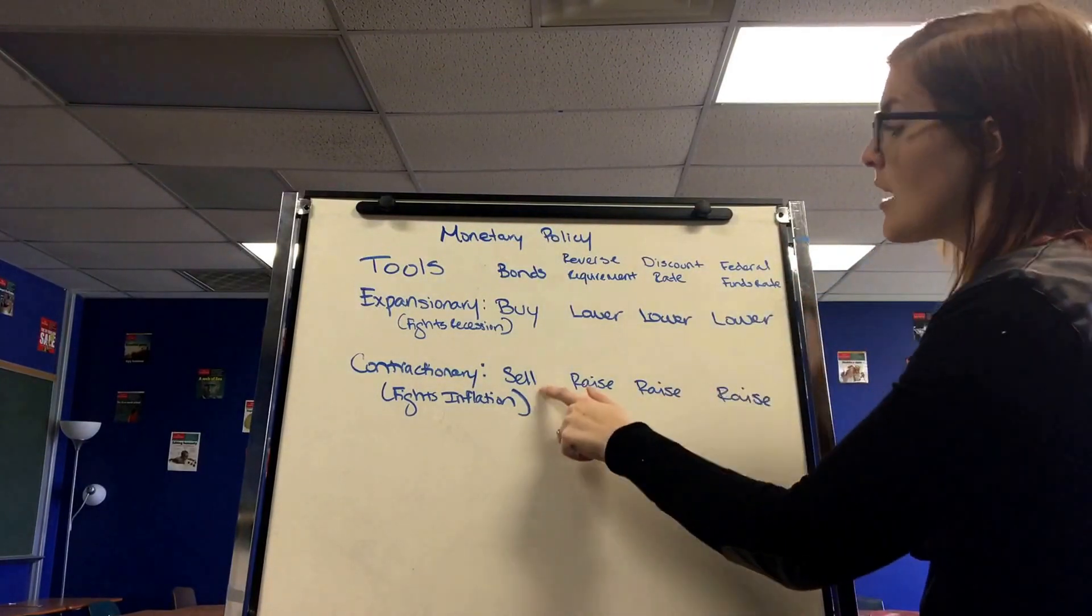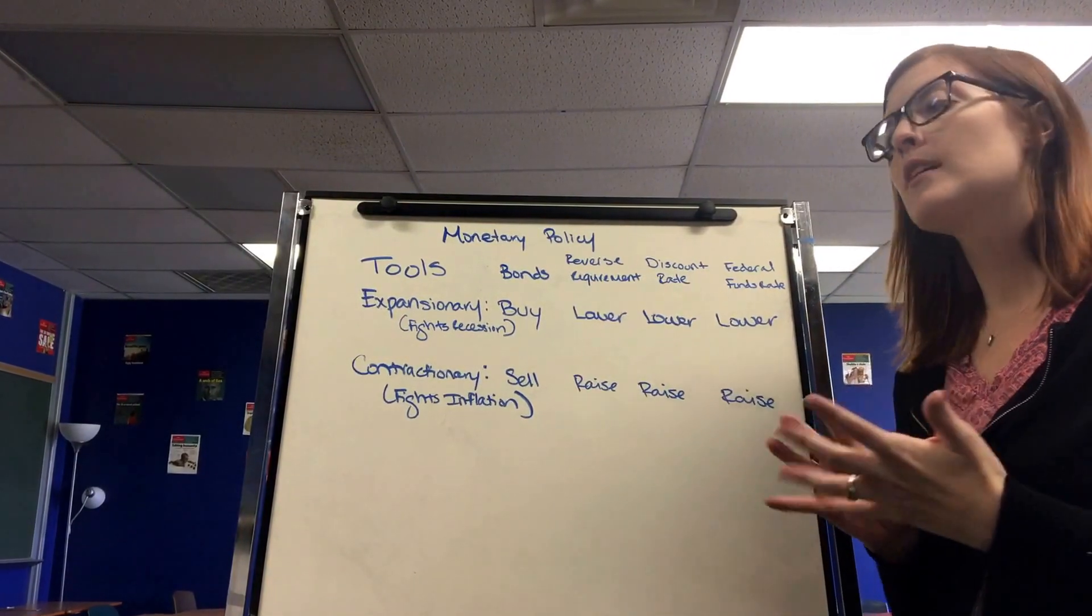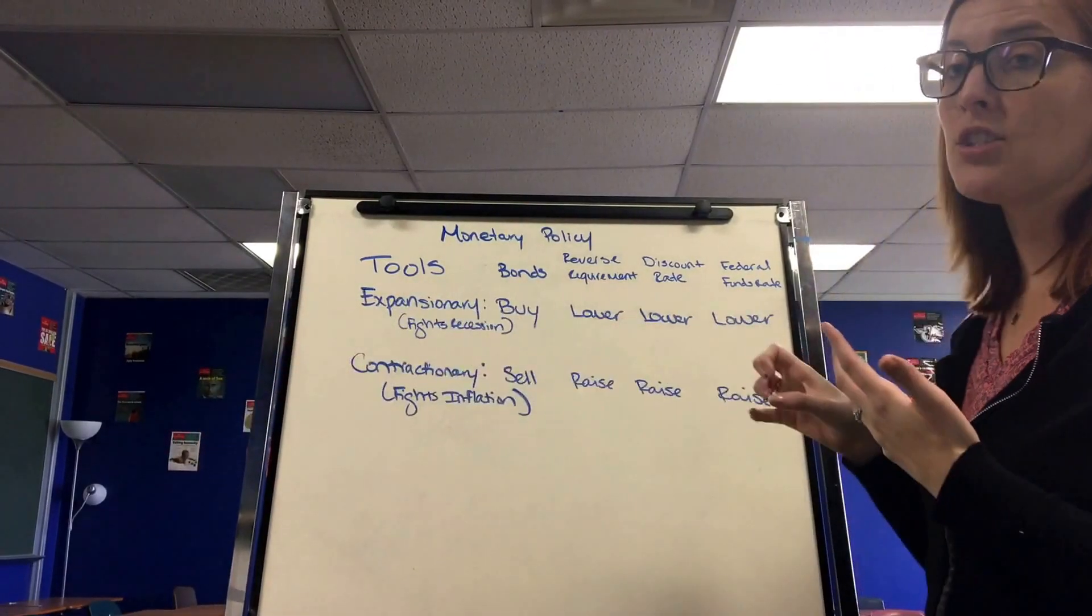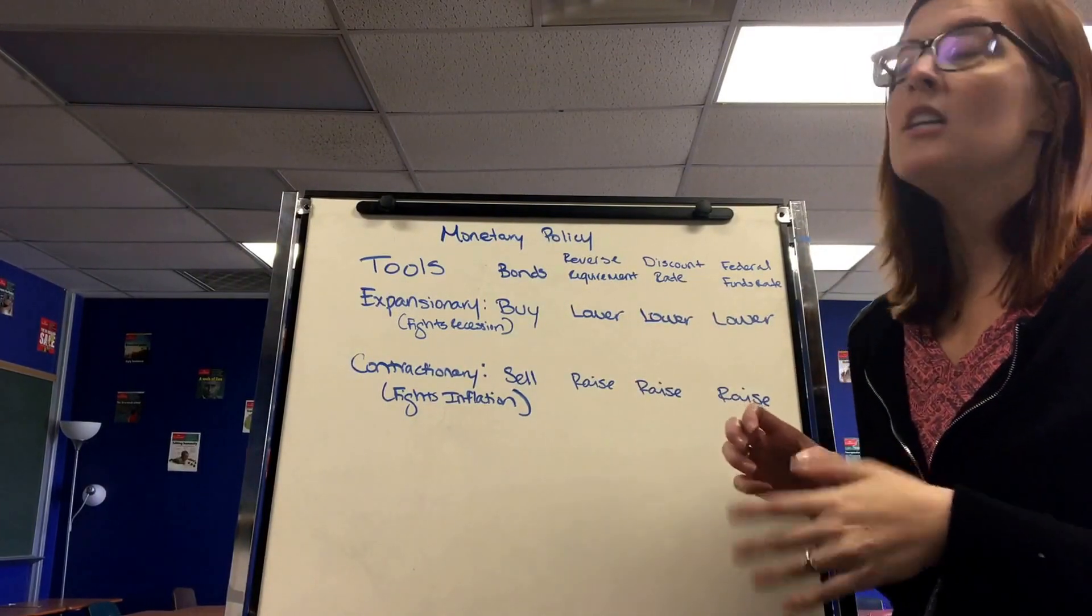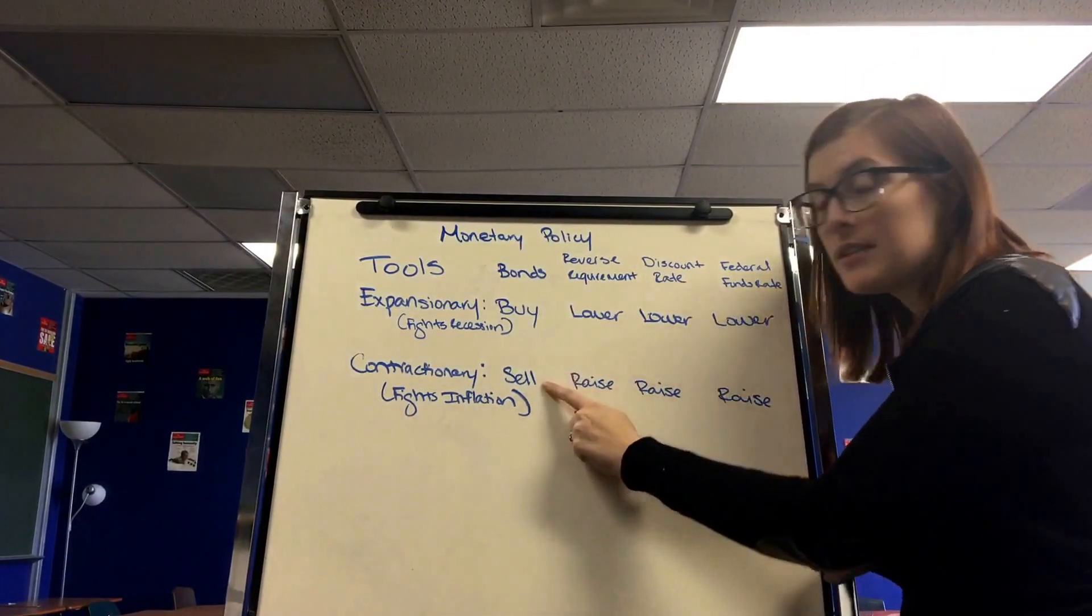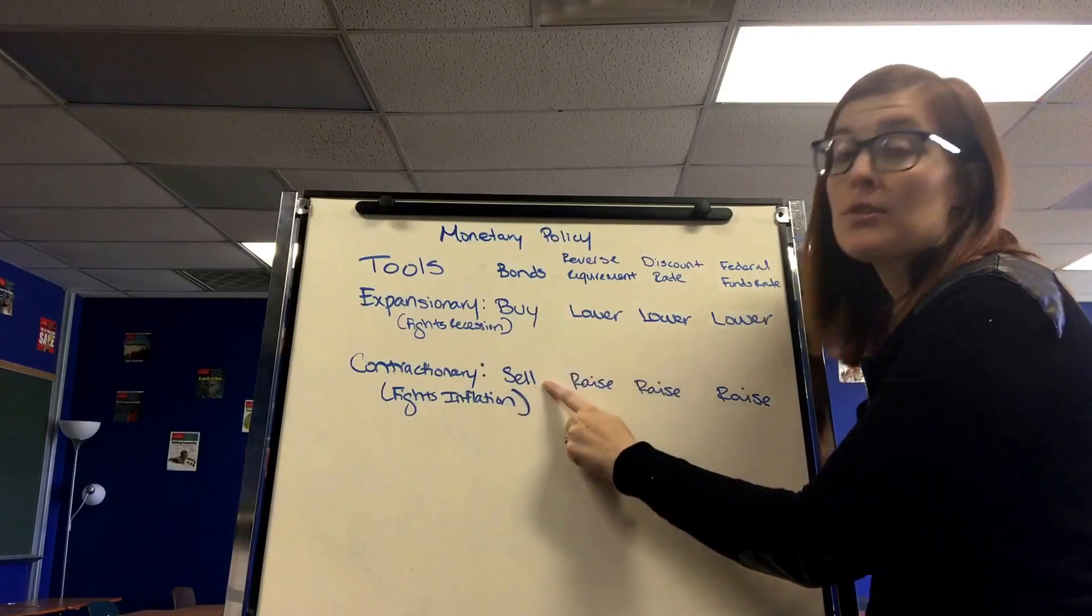In inflation, they would sell bonds. This is when the Federal Reserve takes the money out of circulation by making the government pay back that loan, or sell bonds smaller money. So by selling the bond, they're decreasing the money supply so that interest rates are higher.